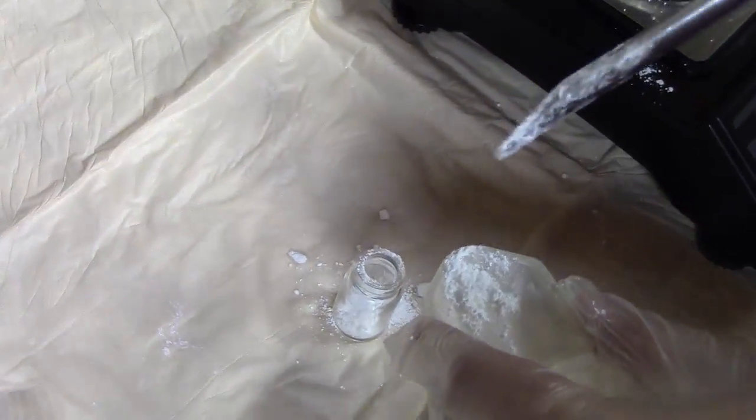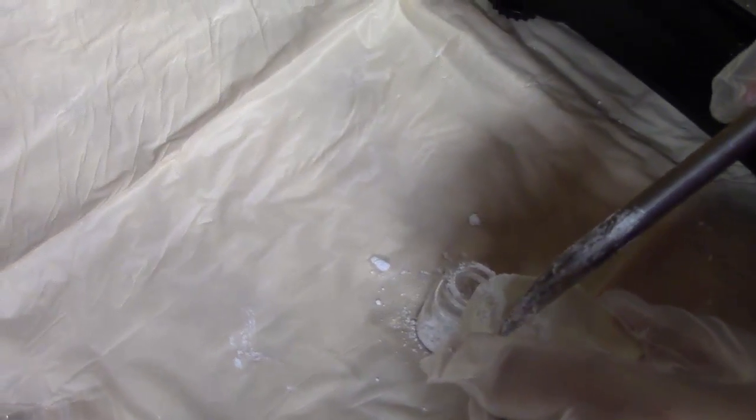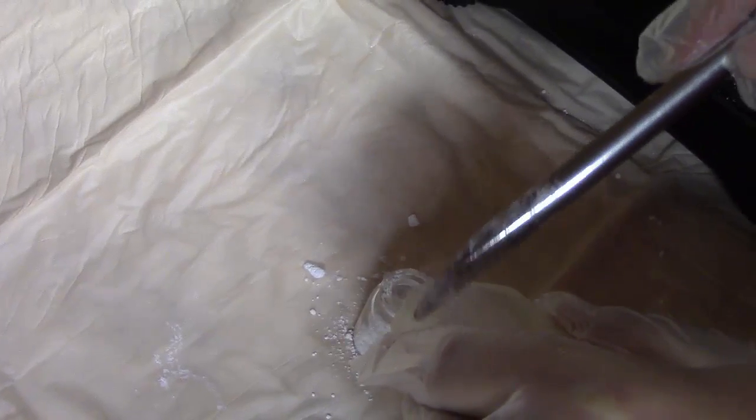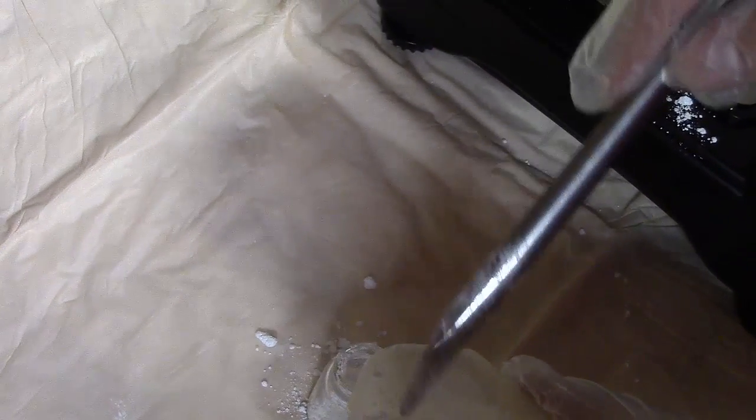The step that created the greatest risk of contamination is the transfer from the weighing bolt to the vial. This is because a small mouthed vial was used for the task. A bigger mouthed vial would have been more suitable.